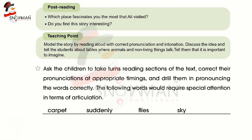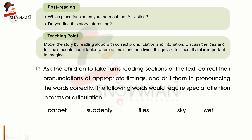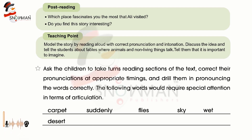Wet — W sound اور V sound میں فرق کیسے لانا ہے. اگر V ہوتا تو ہم کہتے vet، W ہے تو ہم کہیں گے wet. Desert — یہ noun ہے اور deeper stress ہے. اگر اسی word کو verb کے طور پر پڑھا جائے تو s پر stress ہوگا اور لفظ بولا جائے گا dessert.